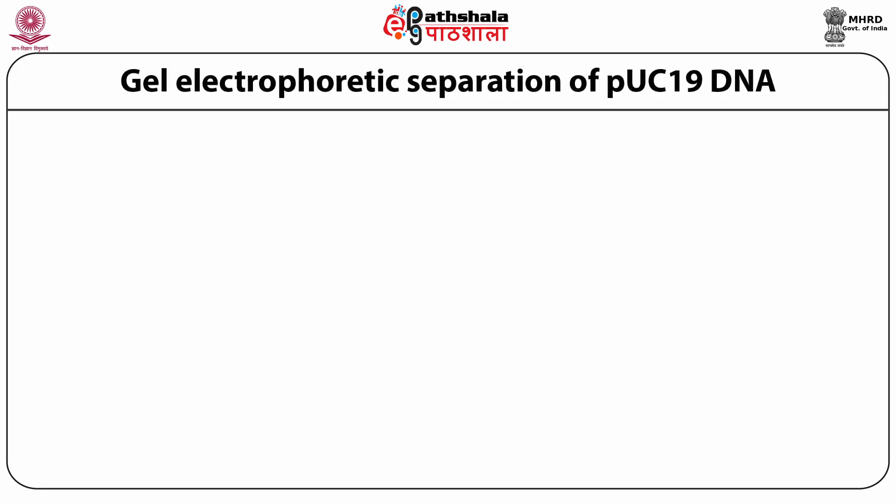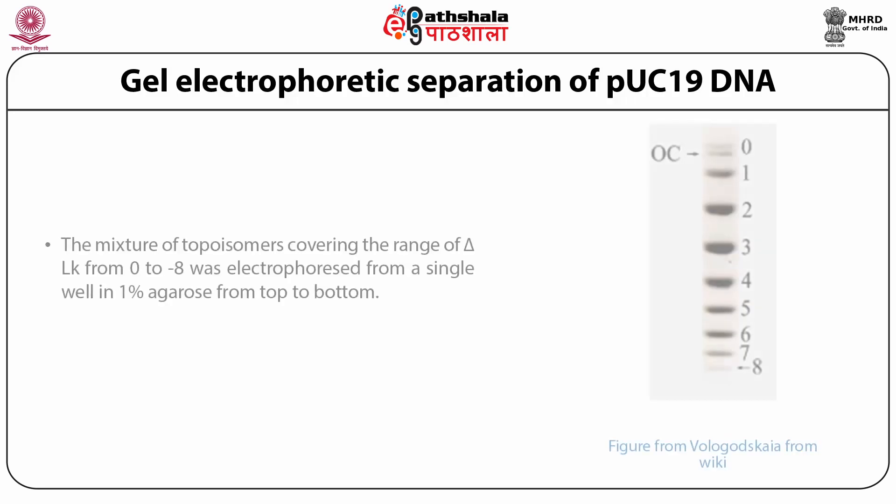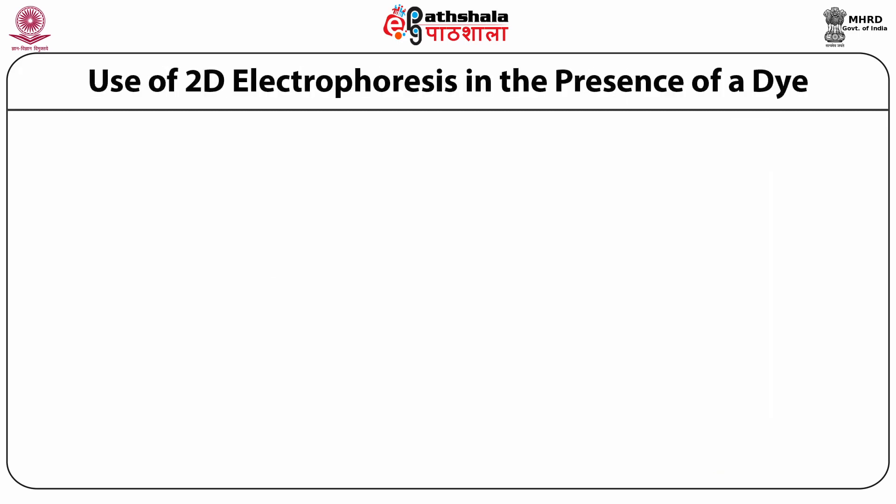We show in this picture the gel electrophoretic separation of a pUC19 DNA combination. The mixture of topoisomers covering the range of delta LK from 0 to minus 8 was electrophoresed from a single well in 1% agarose from top to bottom. The figure is from Vologotska.